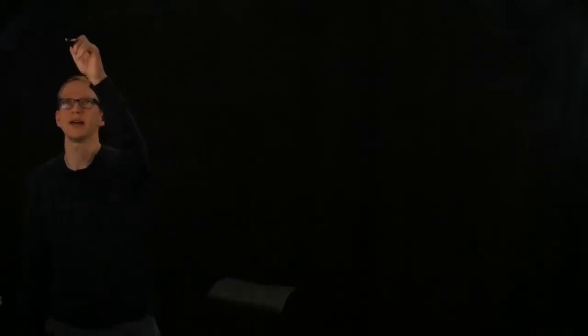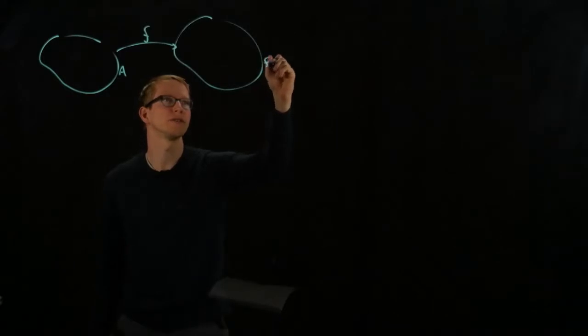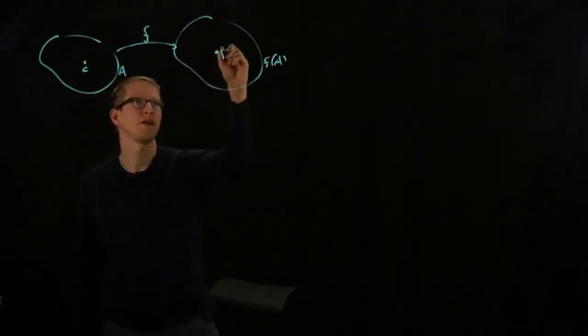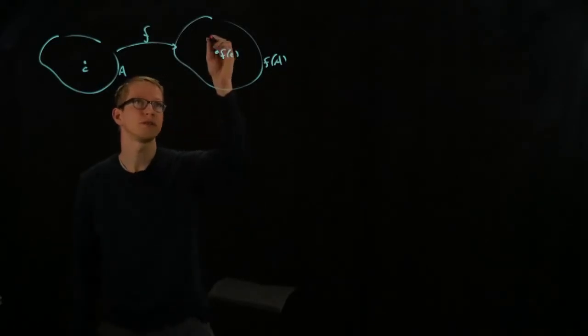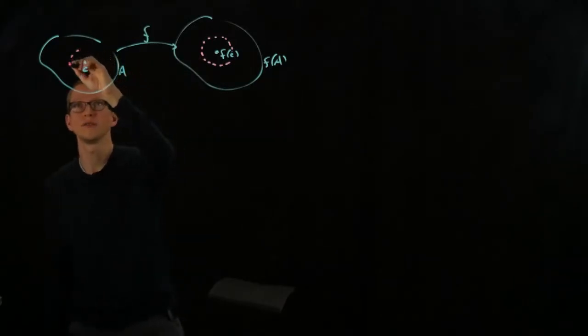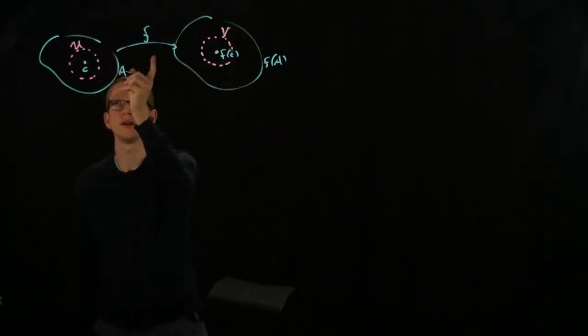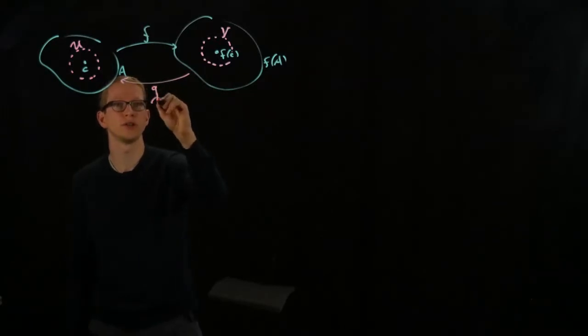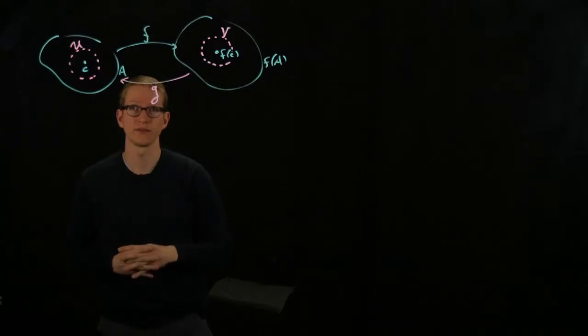The previous theorem told us that if we had a function on some domain A mapping to some image, let's say f of A, and both of these domains are in Rn and they're open subsets, and we knew that if we also had the existence of a differentiable inverse function that was defined in some neighborhood, so I believe we called these subsets U and V, and we knew that the restriction of f on U was differentiable at C, and the restriction of a function G on V was differentiable at f of C, then we had a formula for the differential of G in terms of the differential of F, and that was just the inverse linear transformation associated to the differential of F.